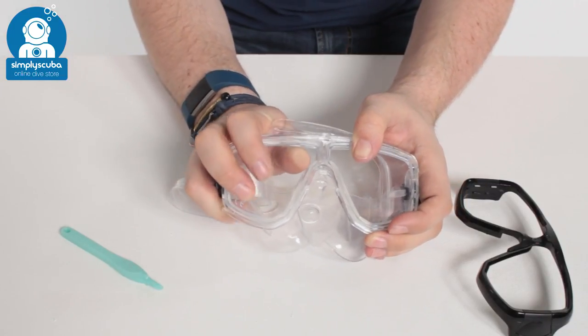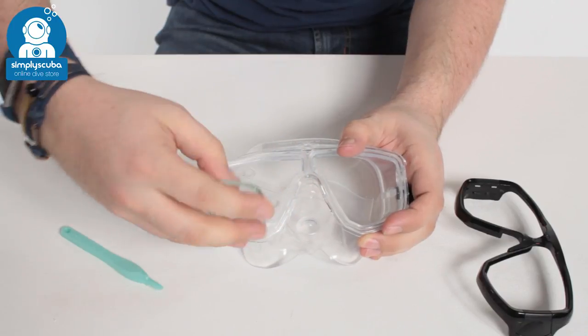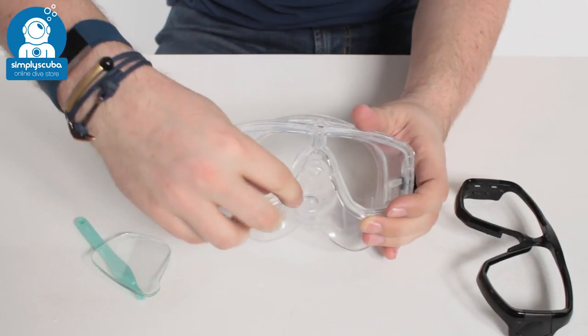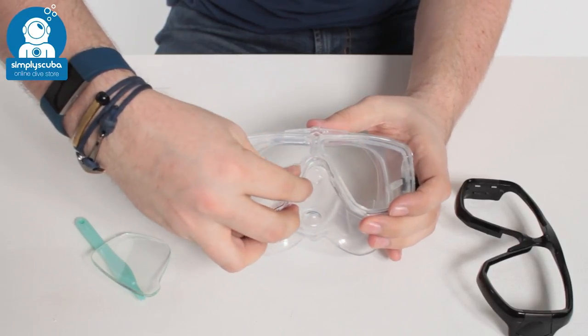So taking the lens out, you just push it out and it will take that skirt with it. So just make sure that goes back into the frame nice and neat and make sure there aren't any gaps.